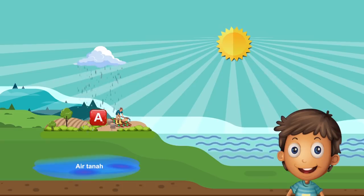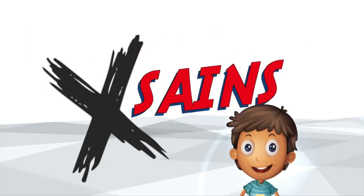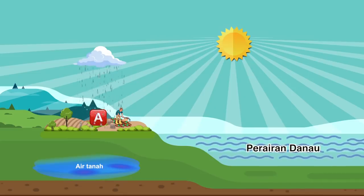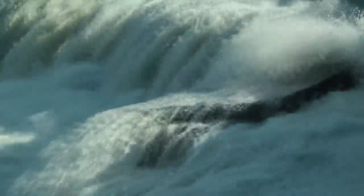Sudah tahu jawabannya? Yuk kita bahas bersama. Jika pada lokasi pertanian A dilakukan proses pemupukan oleh petani, maka ketika hujan pada lokasi tersebut, bagian siklus air yang akan mengalami gangguan adalah pada bagian perairan danau. Karena senyawa kimia dan organik dari lokasi pertanian A akan mengalir pada danau dan mencemari perairan tersebut.